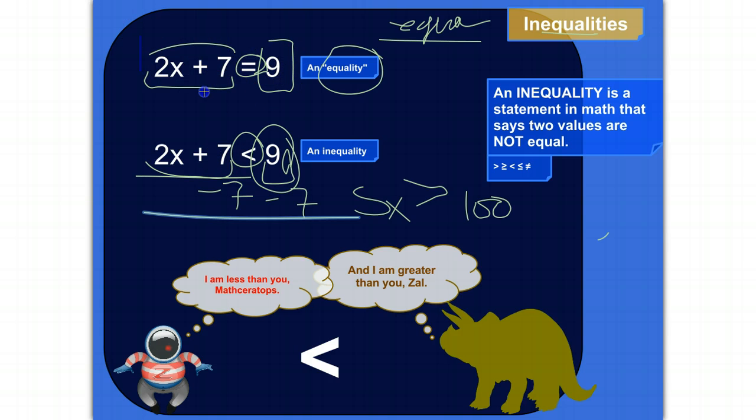But it's the same structure. You've got two sides, and in the equation, they're equal to each other, and in inequality, they're not equal to each other. And they can be not equal to each other in several different ways.